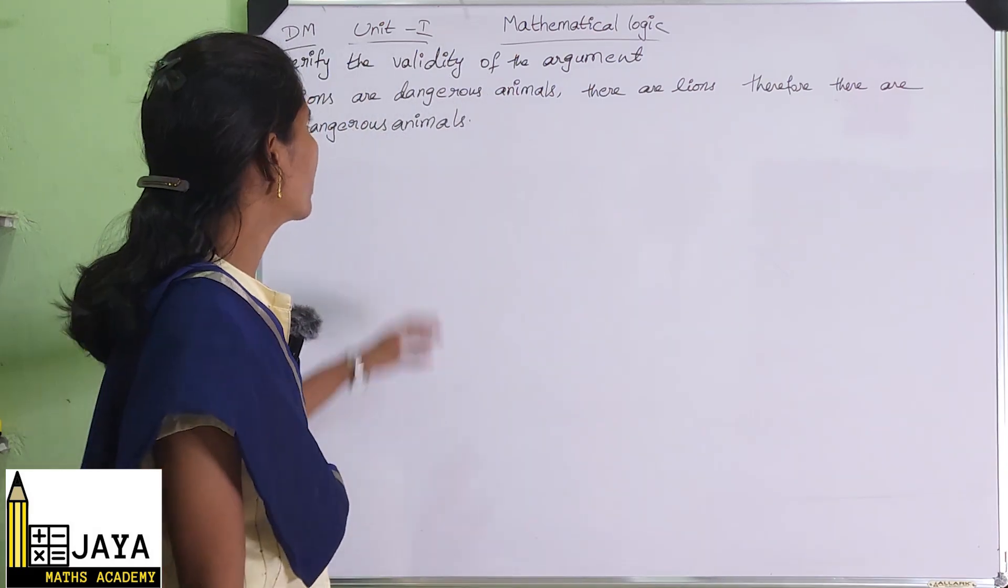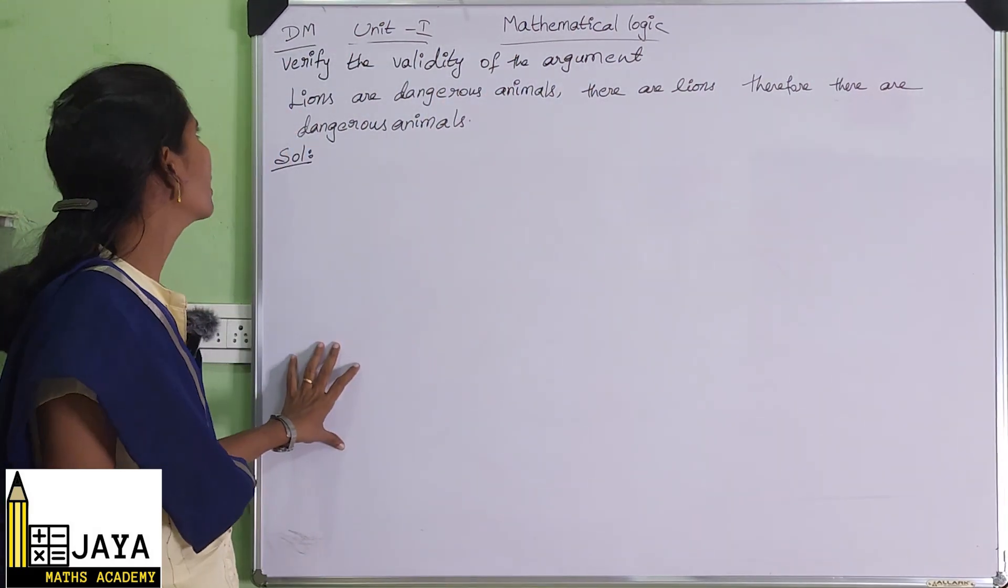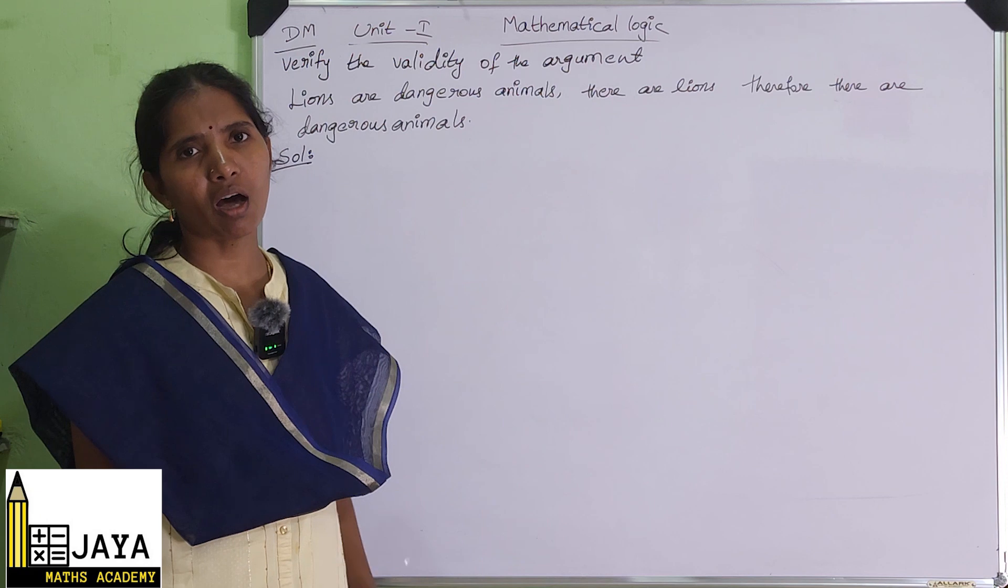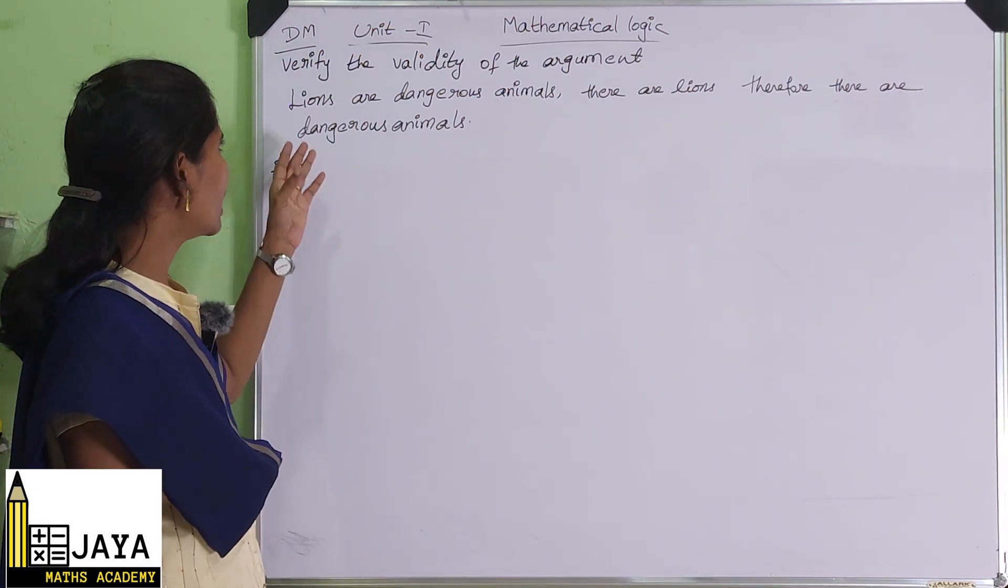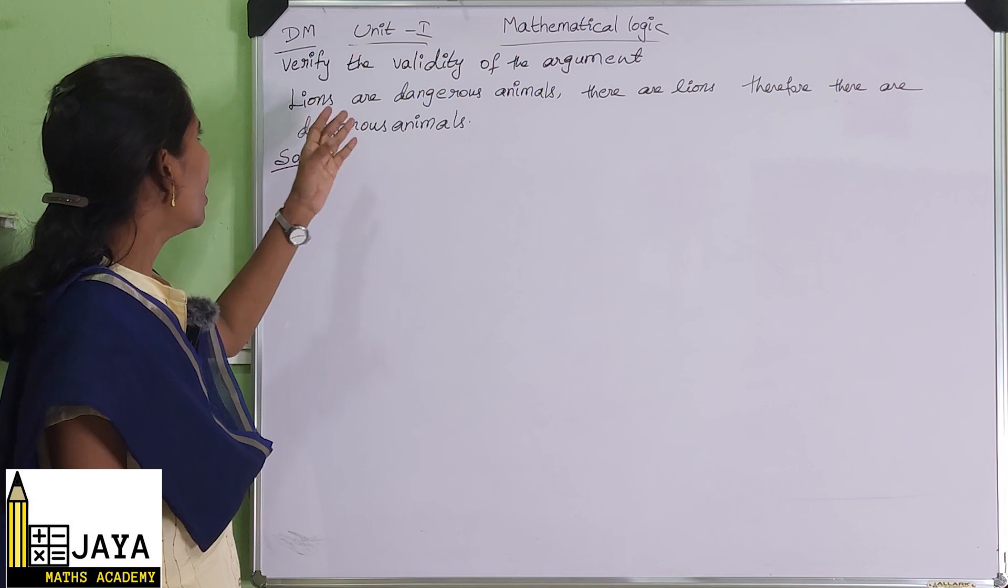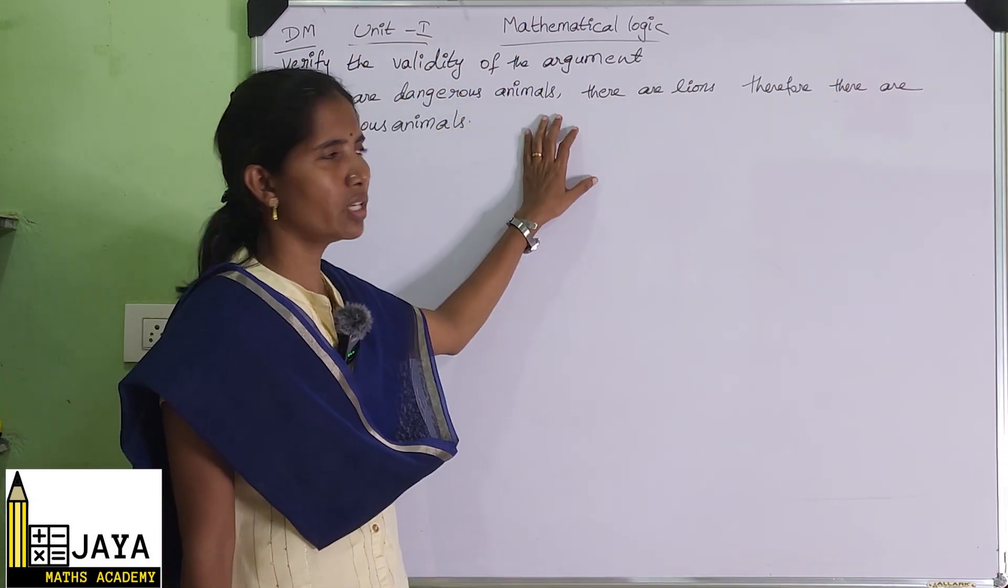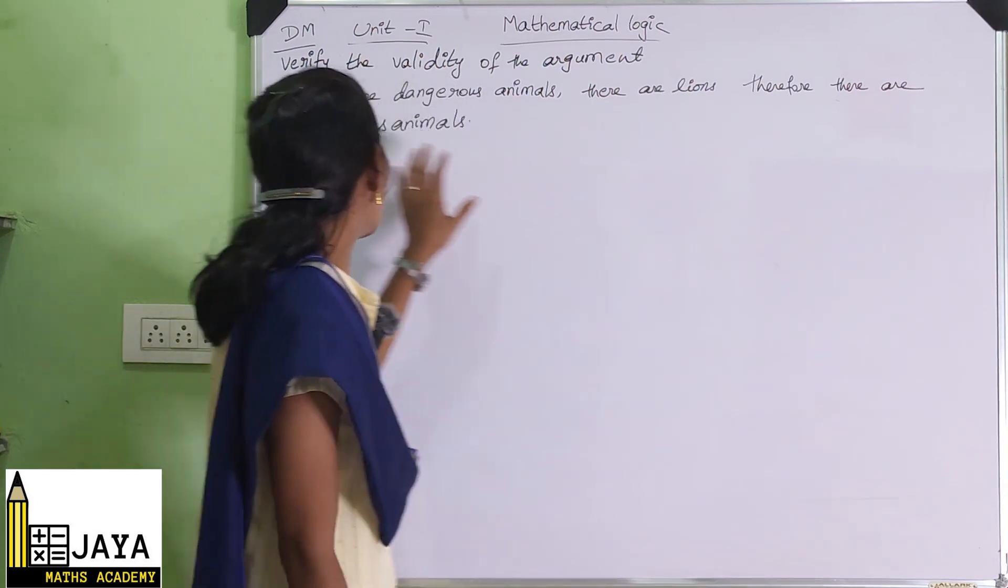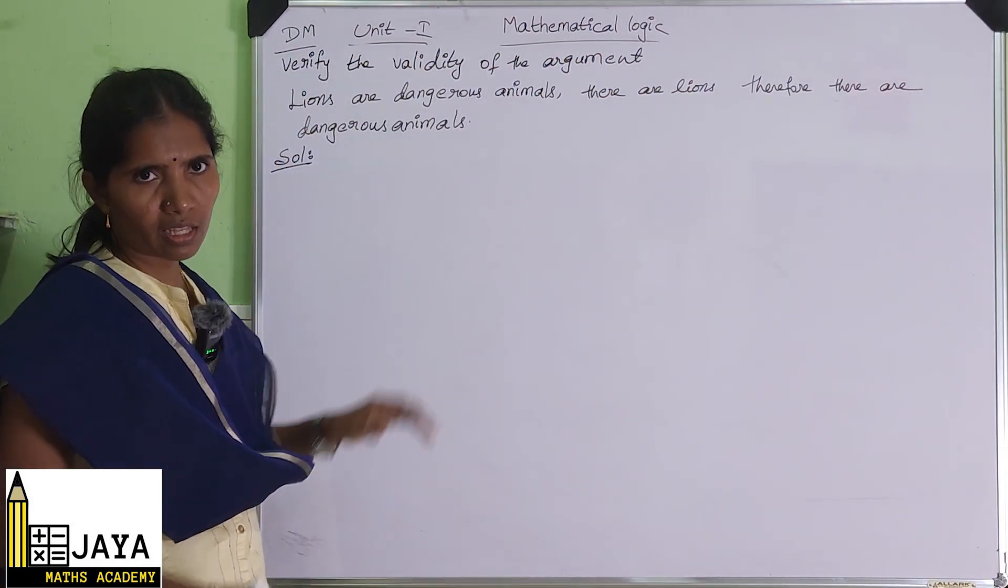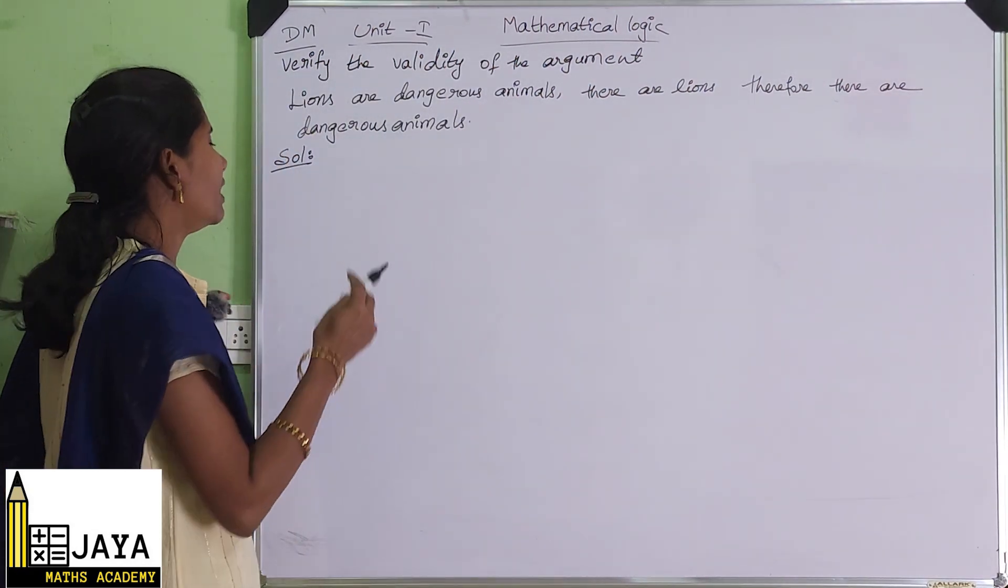Welcome to Jaya Maths. Today's topic is mathematical logic: verify the validity of the argument. We have to check if this argument is valid or not. What is the argument? Lions are dangerous animals. There are lions. Therefore, there are dangerous animals. This is the statement argument.